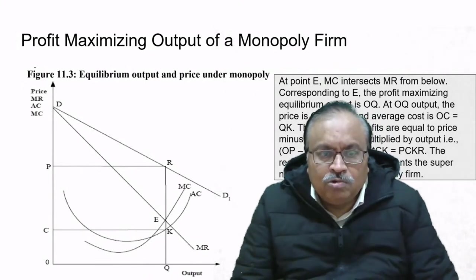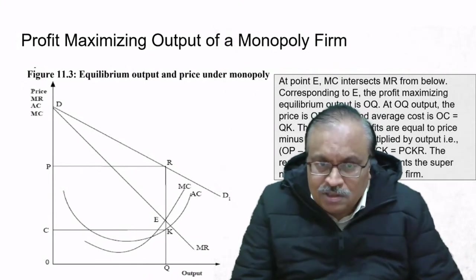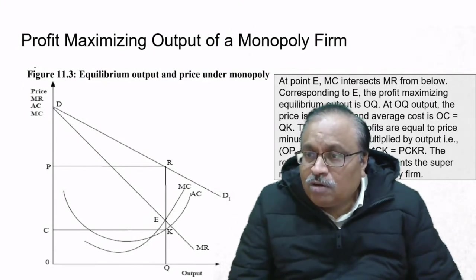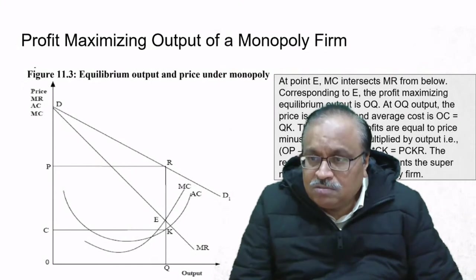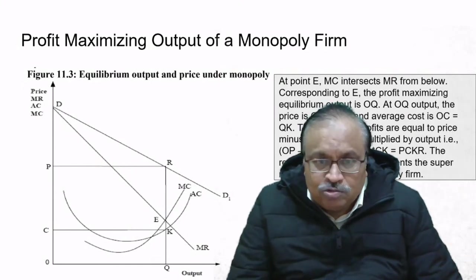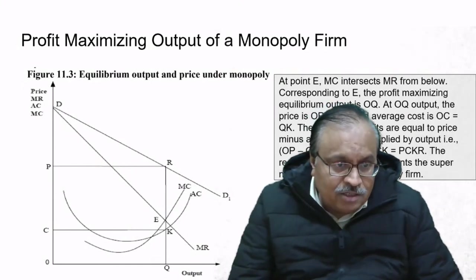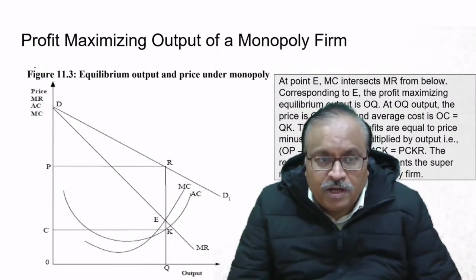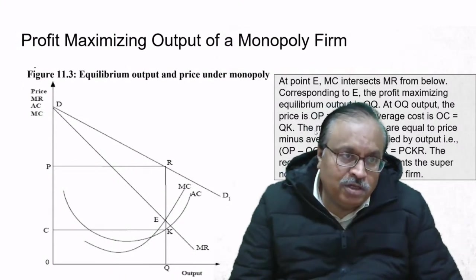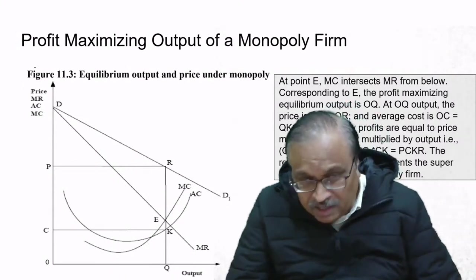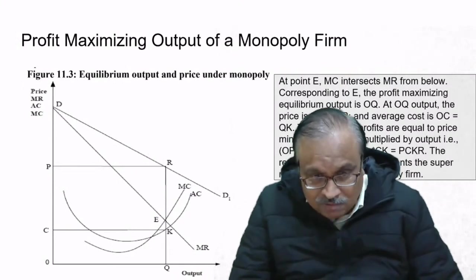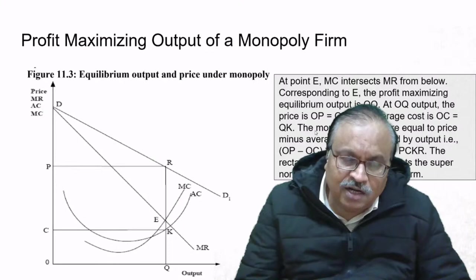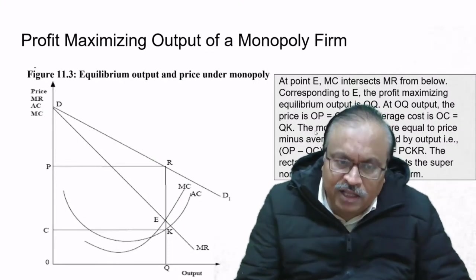Since the graph looks like a square form, OP equals QR is what our price indicates. Monopoly profits are equal to price minus average cost multiplied by output—the area PCKR represents the super-normal profits of the monopoly. That is where we had to close our previous session, so I started slightly back and covered this portion.